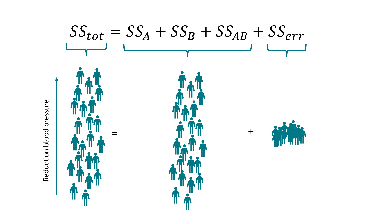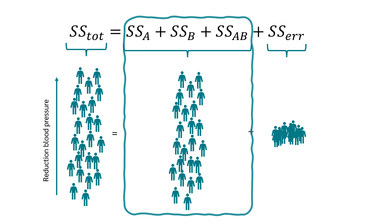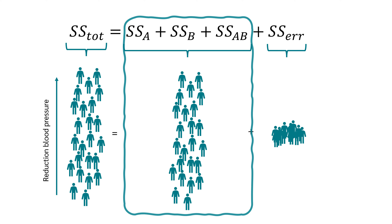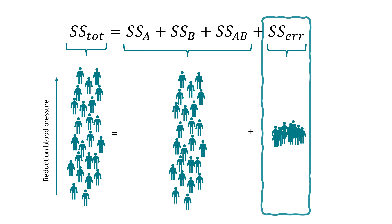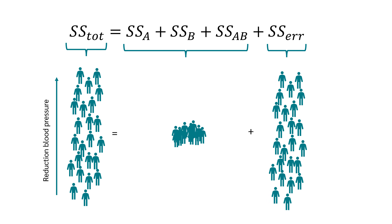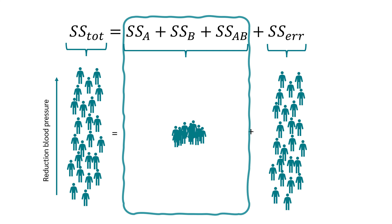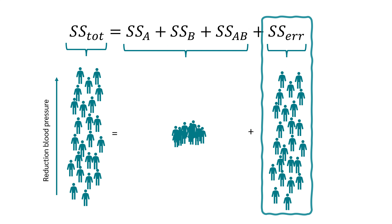The part that cannot be explained by these three terms accumulates in the error. If the result showed factors A and B and their interaction explaining almost all the variance, we could make a very good statement about blood pressure reduction. In the opposite case, drug type, gender, and the interaction would have almost no effect, and it all adds up in the error.